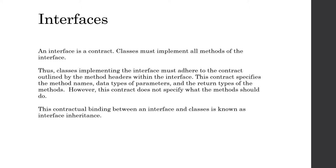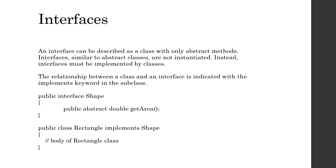A useful analogy for describing the relationship between interfaces and classes is that an interface is like a contract — classes must implement all methods of the interface. Classes implementing the interface must adhere to the contract outlined by the method headers. Using this example, if we're creating a getArea method, we must include that method in the Rectangle class, it must take no arguments, and it must return a double.